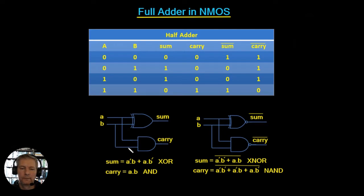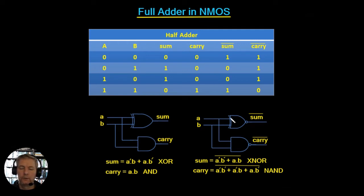We want to build this function in NMOS, but we don't have direct access to the XOR or AND. We only have access to XNOR and NAND functions, because NMOS is pull-down logic and it's the zero we're interested in — so we get the negation of these. I've added an extra couple of columns to the truth table: the negation of the sum and the negation of the carry.